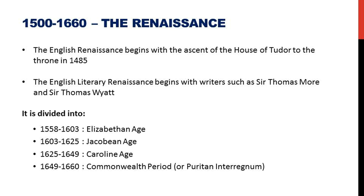We then move to the English Renaissance between 1500 and 1660. It begins with the ascent of the House of Tudor to the throne in 1485, while the English Literary Renaissance begins with writers such as Sir Thomas More and Sir Thomas Wyatt. The age is divided into four periods: the Elizabethan age (1558–1603), the Jacobean period (1603–1625), the Caroline age (1625–1649), and finally the Commonwealth period or Puritan Interregnum (1649–1660).